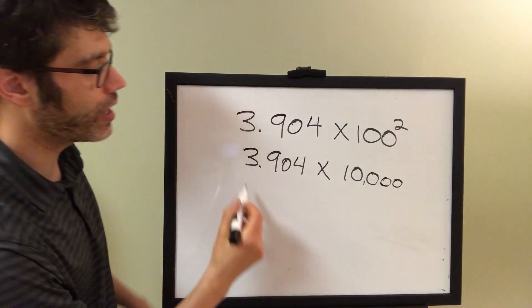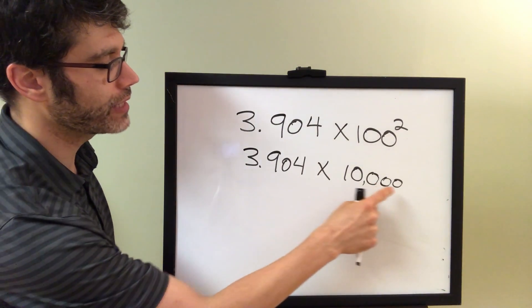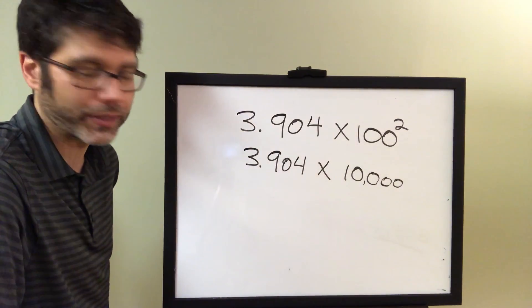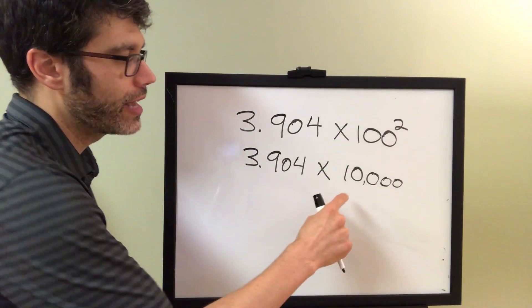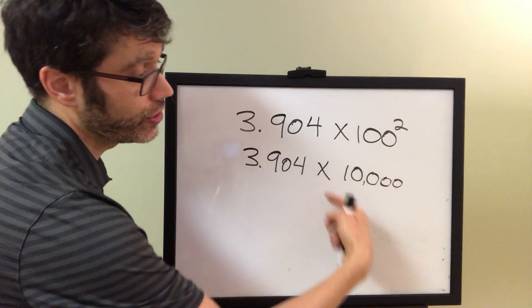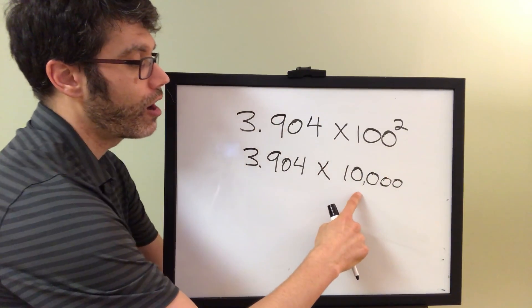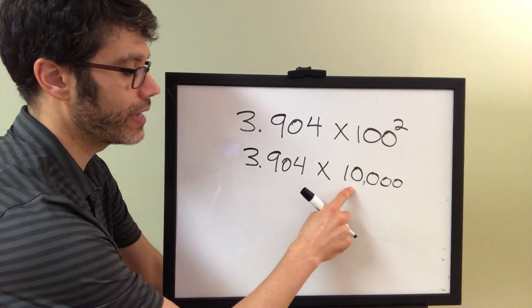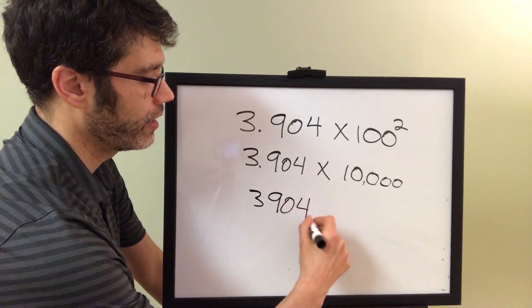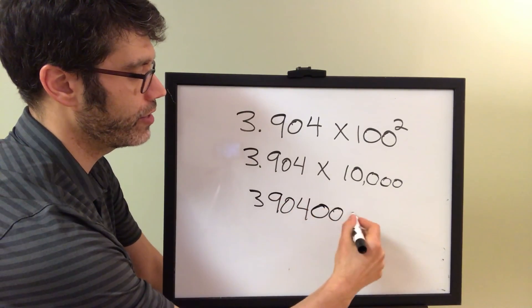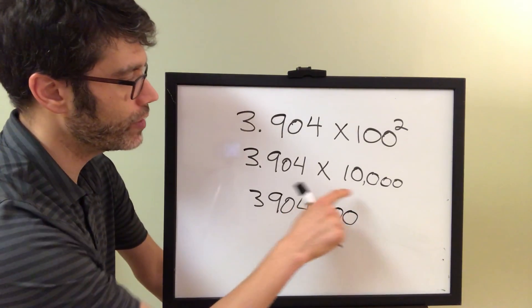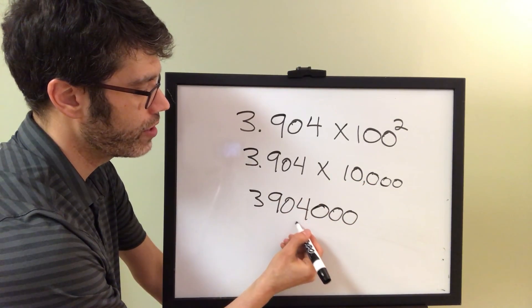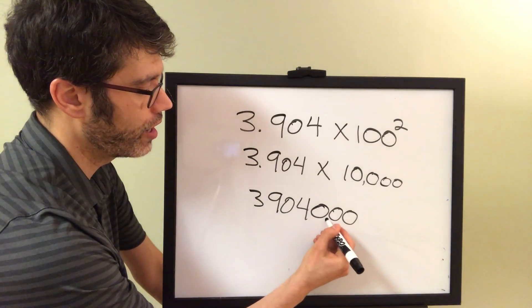So we're multiplying 3.904 times 10,000. Well, instead of actually having to write out and do all the multiplication, since this is a power or a magnitude of 10, all we need to do is move the decimal point to the right however many zeros we have. So let me rewrite it here. Let's add some zeros just so we don't lose our place. We know we need to move four places to the right. So we'll start here. One, two, three, four.